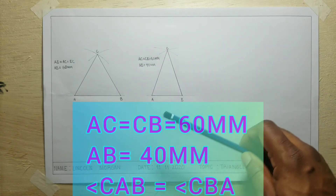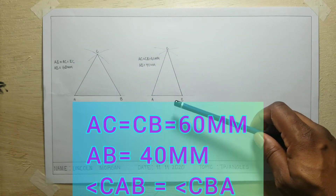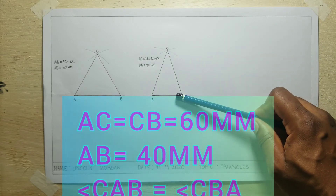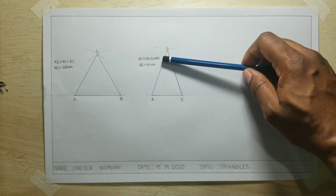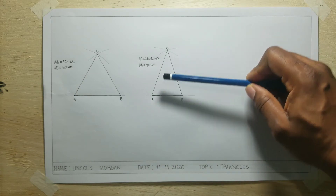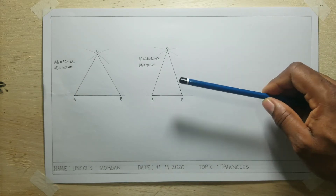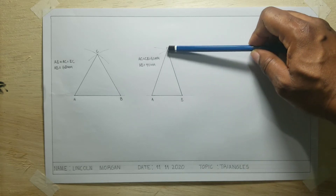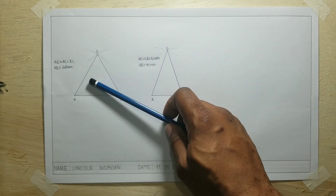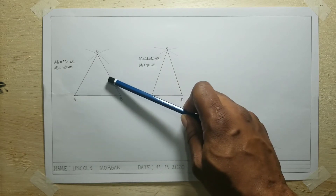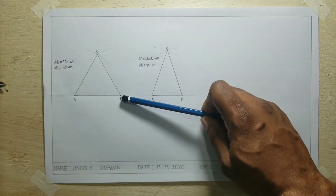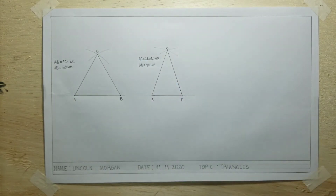From looking at our triangle we can observe that this angle and this angle are the same. However, this angle right here is different — so two equal angles and two equal sides in length. For the equilateral triangle, all angles are the same and all lengths of the sides are also the same.